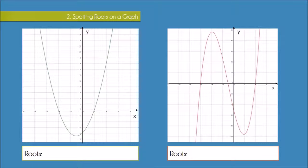So if we first look at the quadratic function on the left, we see that there are two roots because there are two points where the graph crosses the x axis, and that's at the point where x is minus 4 and where x is 2. So our roots we can simply write as x equals minus 4 and x equals 2.